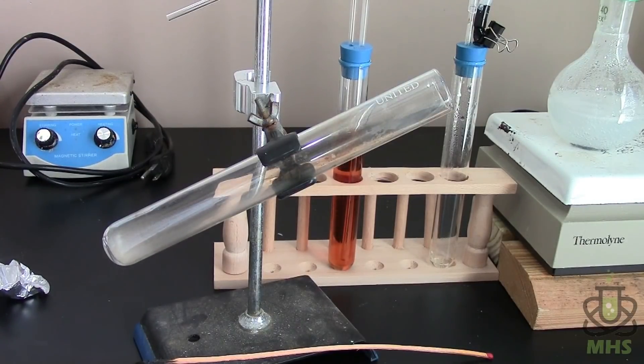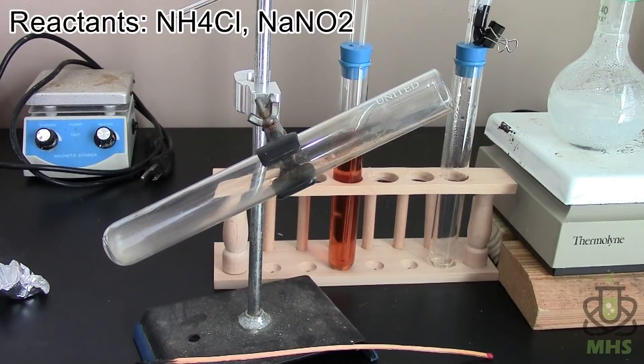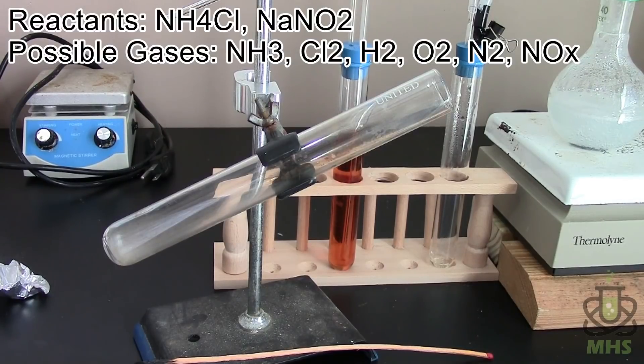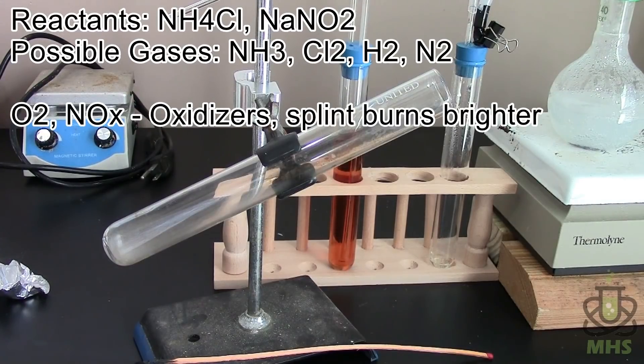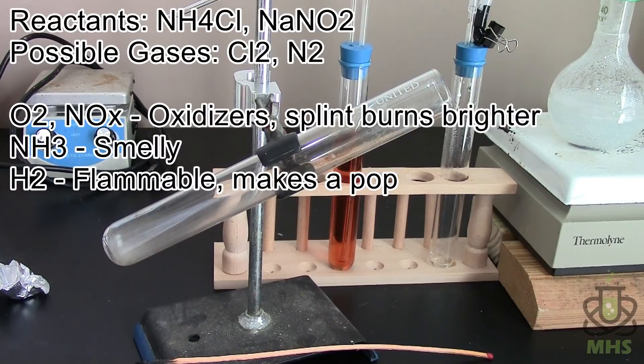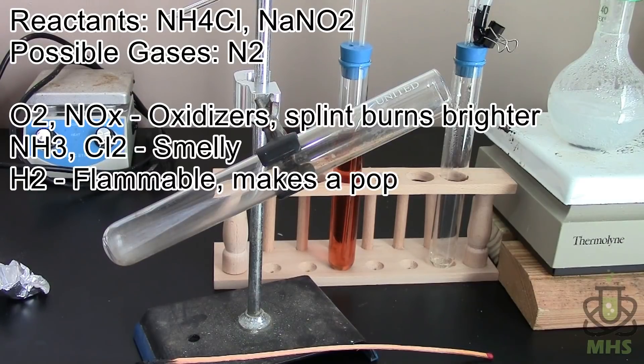But if you look at the reactants that we started with, we've got ammonium chloride and sodium nitrite. So the potential gases I could see being produced are nitrogen of course, nitrogen oxides, maybe ammonia, chlorine somehow, oxygen, maybe hydrogen. But all those gases would behave differently in this test. The oxygen and the nitrous oxides are oxidizers and so they would make the flame brighter. The ammonia I would definitely smell which I don't so it's not that. Hydrogen would make the little pop. Chlorine I would also smell. So if you kind of rule out all the other possibilities really you're just left with nitrogen.